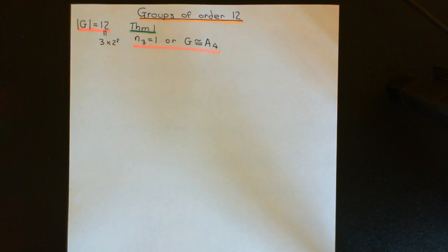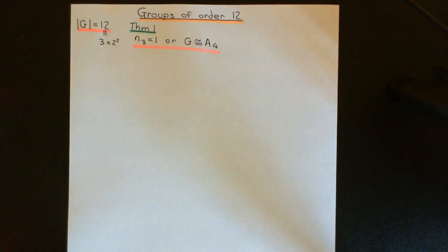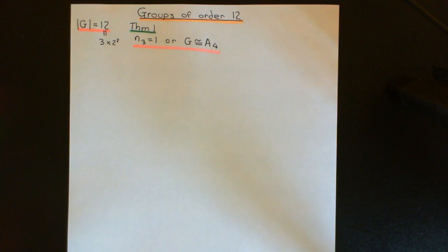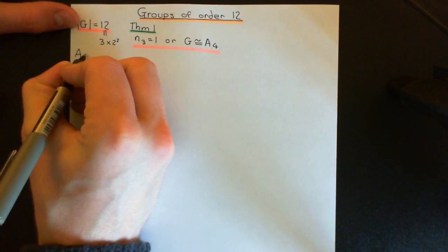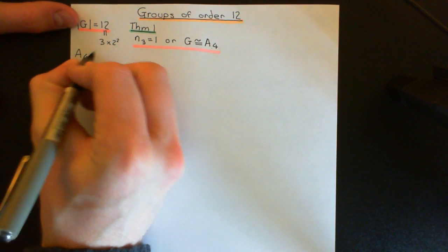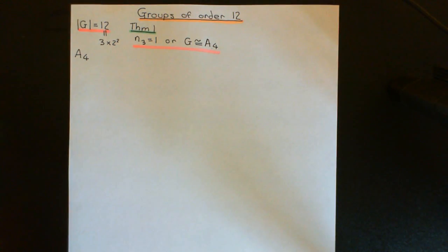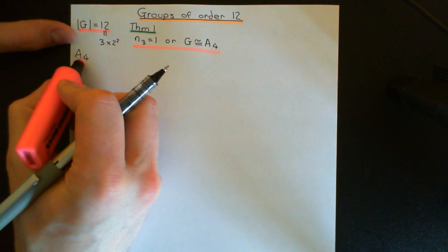The first thing we're going to do before we prove this is study the alternating group on the set of four elements. It's a very important example of a group of order 12 and deserves study in its own right. So the prerequisite before we actually prove this theorem is the study of the alternating group on the set of four elements.